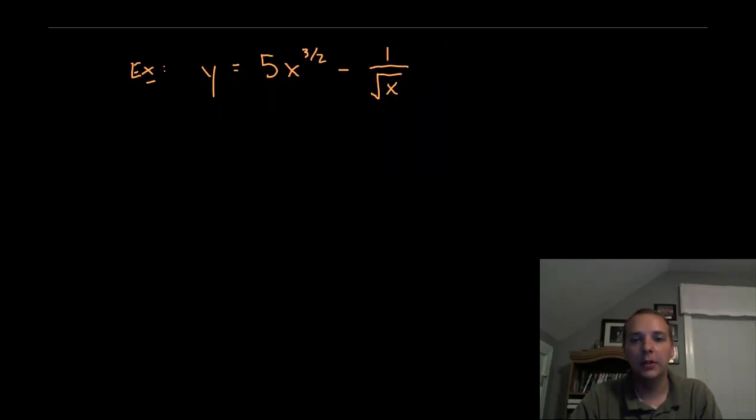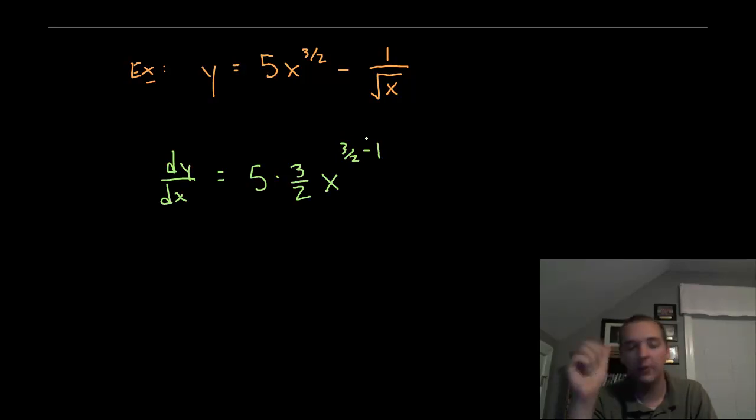Alright here's another one that's slightly more difficult but still not too bad. If here's y then we'll say dy dx or the derivative of y with respect to x. It's another notation for derivative. It would be 5 times the 3 halves will come down x to the 3 halves minus 1. We have to take 1 away from that exponent.